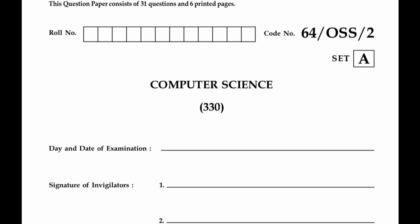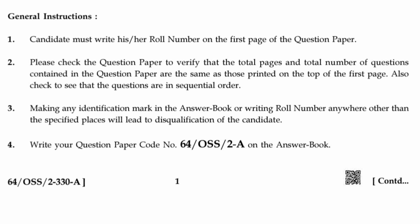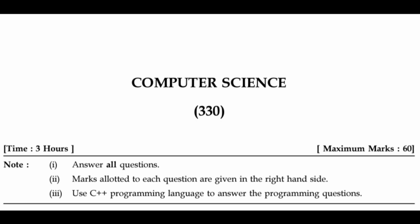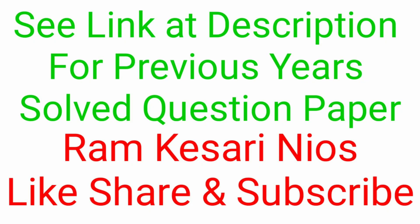Hello students, today I am going to solve NIS 330 Computer Science question paper of October 2022. Maximum marks is 60 and passing marks is 20. Time duration is 3 hours. All questions are compulsory. See the link in the description for previous year's solved question papers.